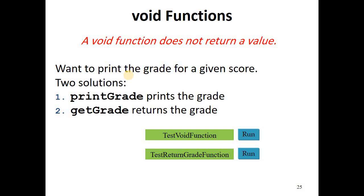We'll show you an example. This example, a program that prints the grade of a student A, B, C, D, or F, given a score out of 100. There are two solutions. Print grade is a function that prints the grade given the score. Get grade is a function that returns the grade to the caller, to the main function, given the score.